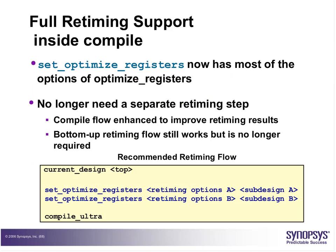Users can trade off between QoR and runtime for reset state justification during retiming. There is a justification_effort option: if set to no, DC finishes quickly at reduced quality. Medium is the default, offering the best QoR-runtime trade-off. High has potentially longer runtime. You can use this selectively on some part of the design, or apply it collectively to portions of the design that need retiming.